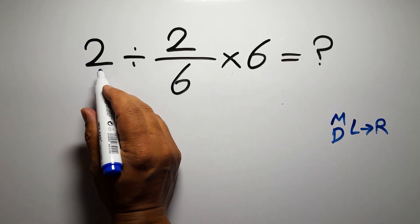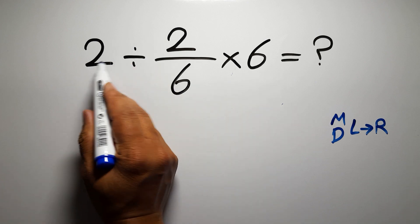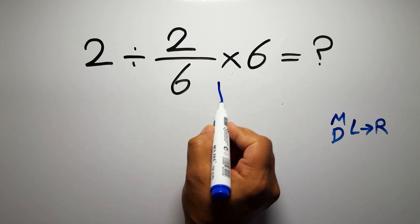So we have to work from left to right. First, this division. 2 divided by 2 over 6.